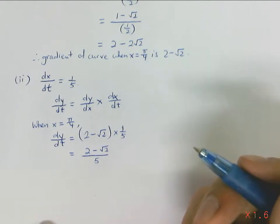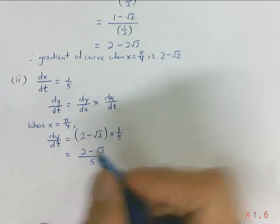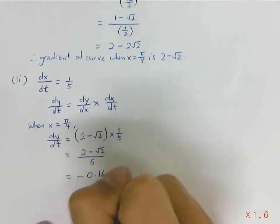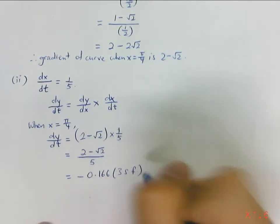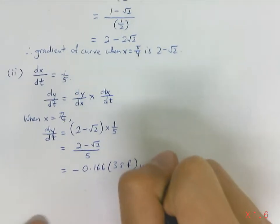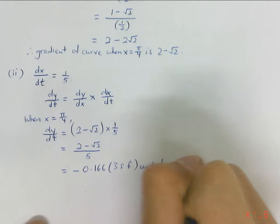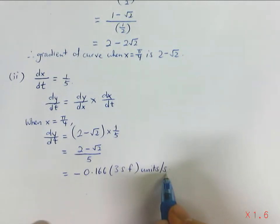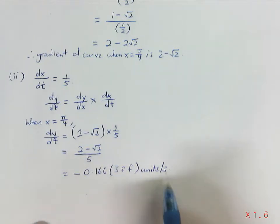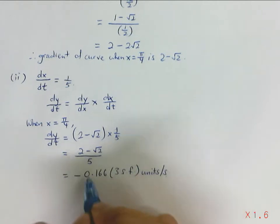And you can simplify this as 2 minus root 2 over 5. Or if you are leaving your answer in 3 significant figures, please make sure you write the degree of accuracy. This will be negative 0.166, and not forgetting the units per second. As y is decreasing at a rate, the denominator is a time factor, so per second. And that will be your answer.